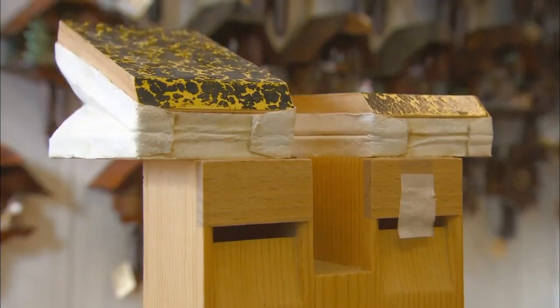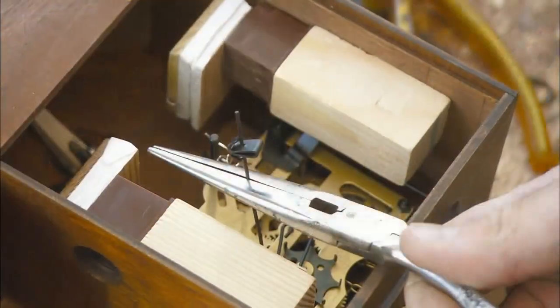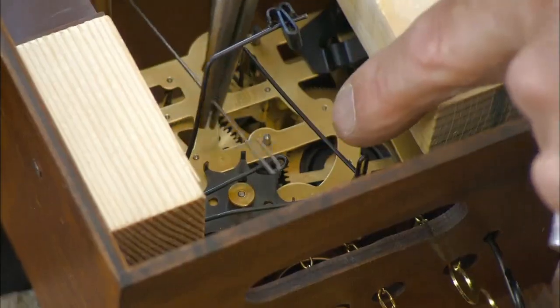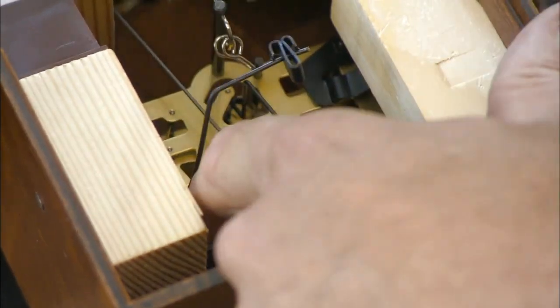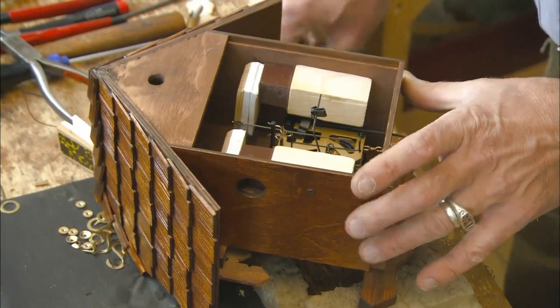As this demonstration shows, the bird's cuckoo is actually the sound of air pumping in and out of two miniature bellows. Before each cuckoo, the hammer on the end of this steel wire hits a tiny gong. The number of gong cuckoos indicates the hour.